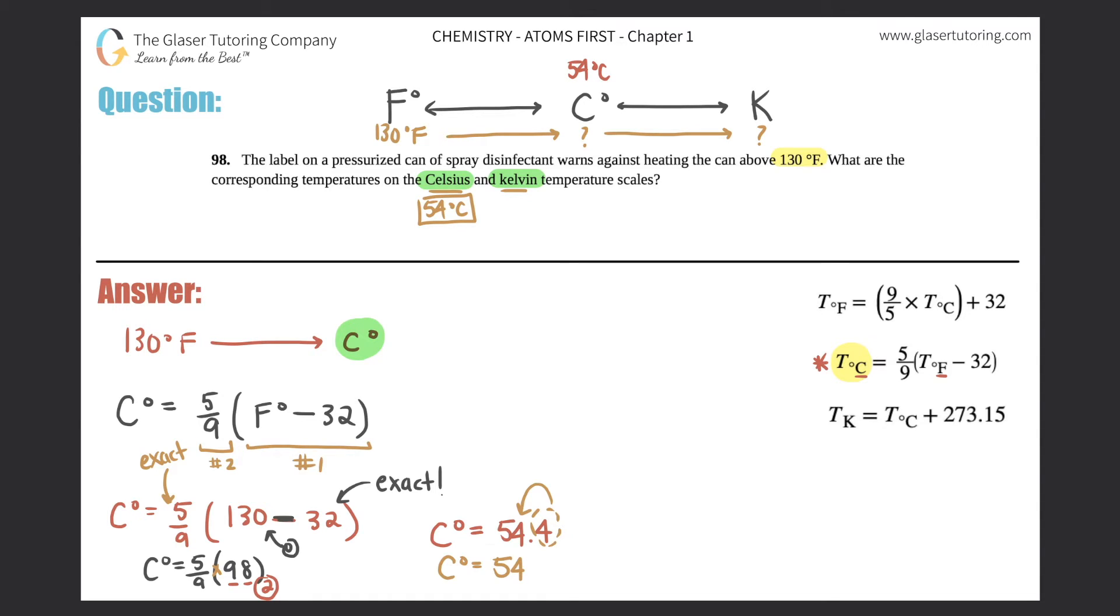Now we have 54°C. I have to use this 54°C to get to Kelvin - I can't use the 130 anymore. So I'll go from 54°C to Kelvin. What formula will I use? It's got to be the one for Kelvin.